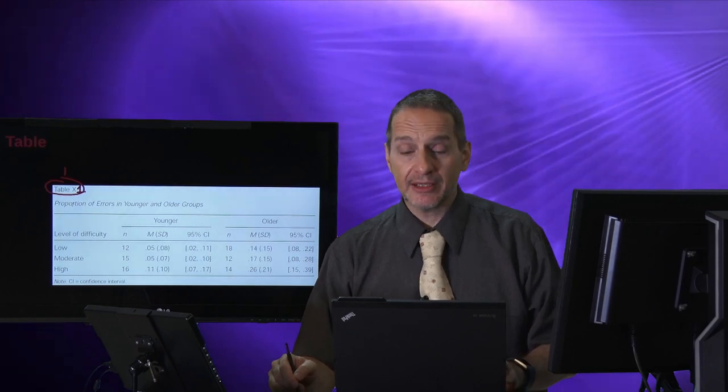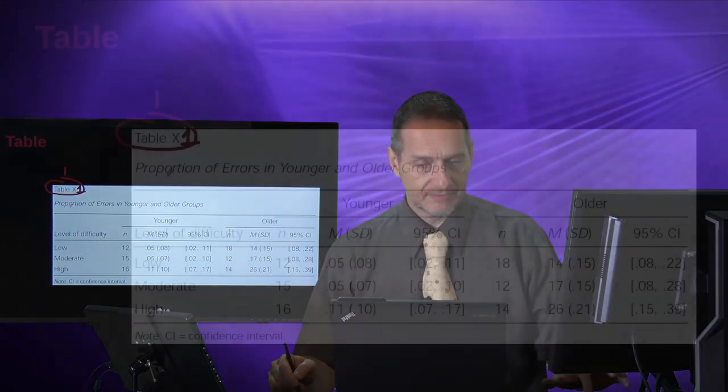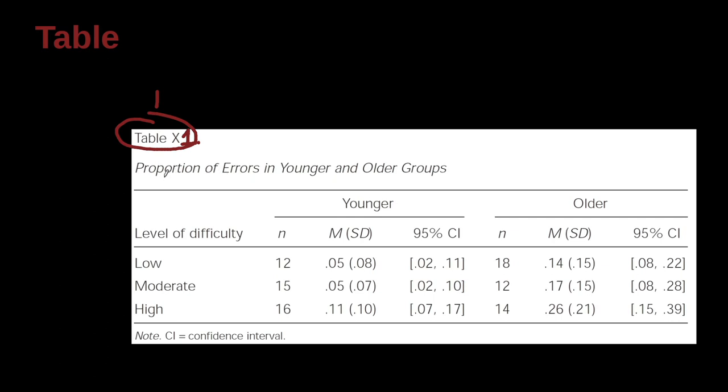And then we have the title, and then we have the title down here. So proportion of errors in younger and older groups.